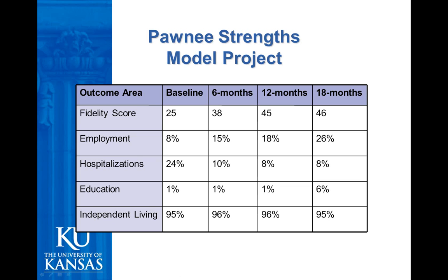There have been 10 studies that have tested the effectiveness of the strengths model with people with serious mental illness — four experimental and six quasi-experimental. All of the studies ever done on the strengths model have shown improvement, especially within outcomes such as reducing hospitalization, improved housing tenure, employment, reduced symptoms, increased leisure time, and social support. So there's a nice building base to the strengths model.